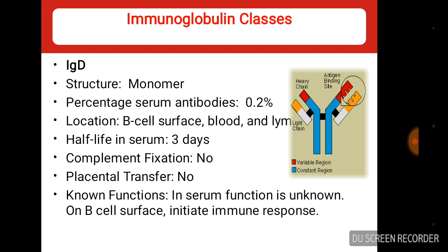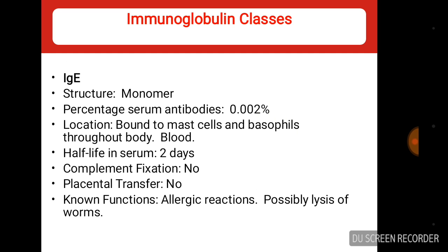IgD has a monomeric structure and is present at very low levels — only 0.2% in serum. Its location is B cell surface, blood, and lymph. The half-life is 3 days and IgD mainly acts as an antigen receptor on B cells that have not been exposed to antigen. IgE also has a monomeric structure and is present at extremely low levels — 0.002% in serum. IgE is involved in hypersensitivity and allergy, with a half-life of 2 days, and its functions include allergic reactions and possibly lysis of parasites.